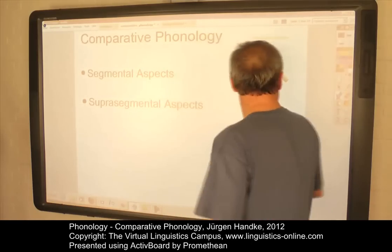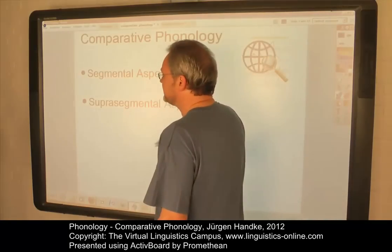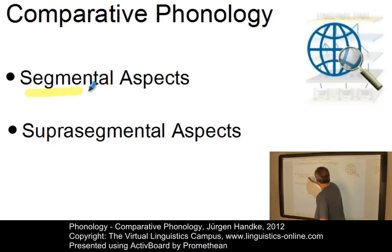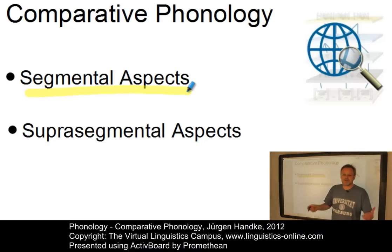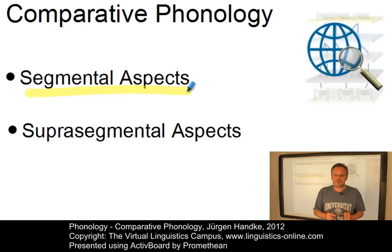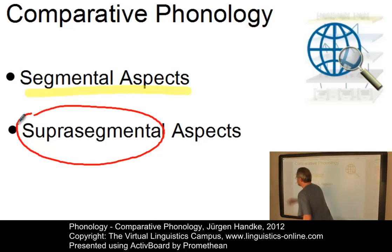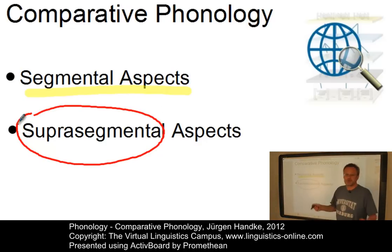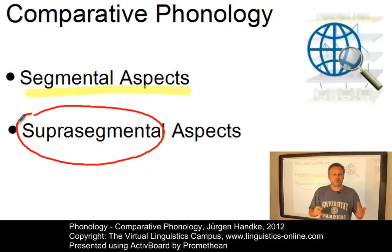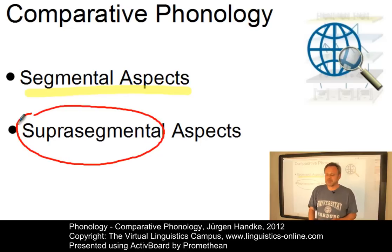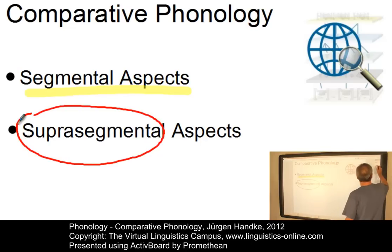For example, one could use segmental aspects, such as the presence or absence of certain segments or groups of segments, or we could take suprasegmental aspects such as rhythm or tonal patterns. We will look at both in this e-lecture: segmental and suprasegmental factors of classifying languages. Let us start with the treatment of segmental aspects.